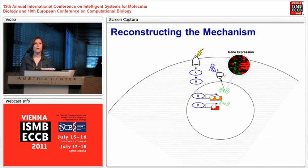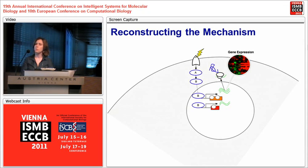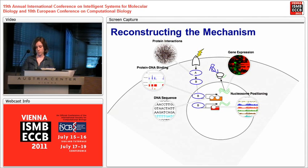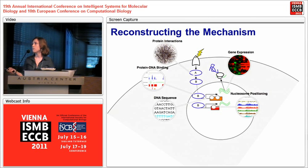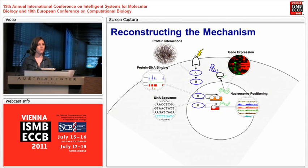Going back to our cartoon, we notice that we now have data from other parts of the process: protein-protein interactions, binding of protein to DNA, the DNA sequence itself, and nucleosome positioning and modifications. We wanted to use these other levels of information to improve the model and address the causality problem.